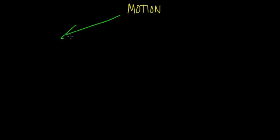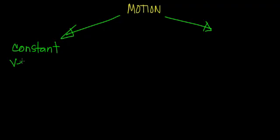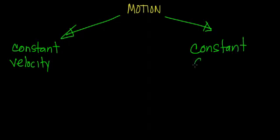In the last few sessions, we distinguished the two different types of motion. One type we called constant velocity, meaning the velocity does not change. The other type was constant, sometimes called uniform, acceleration. In this video, we'll look at the graphical distinctions between these two types of motion to clarify any remaining ambiguity.